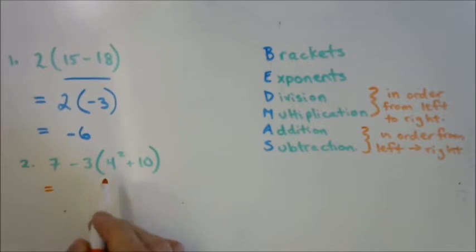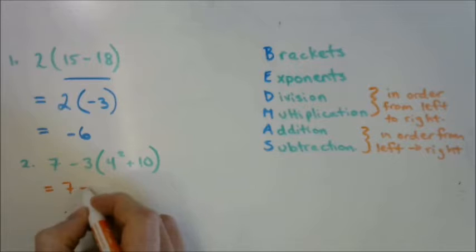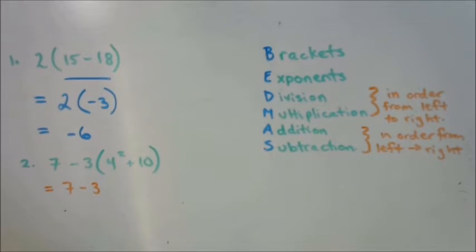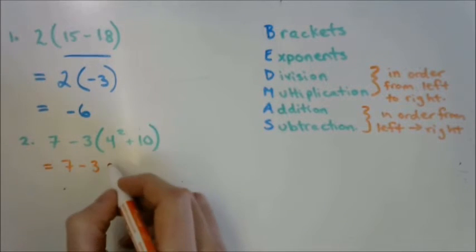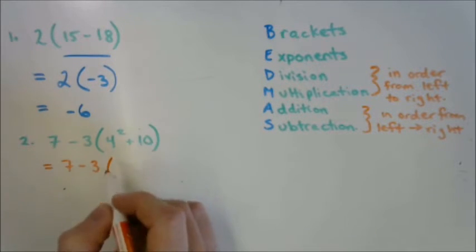What are we going to do first? We're going to take care of what's inside the bracket first. So I'm just going to rewrite what's not inside the bracket. Now, even inside the bracket, we have a decision to make. What is that decision? We have an exponent first. Right. We have addition and we have an exponent. So we need to do the exponent first. 4 squared.